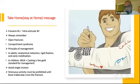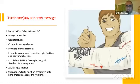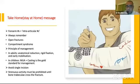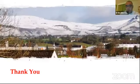Take-home messages: Forearm fractures are intra-articular fractures. Always remember open fractures and compartment syndrome. The principle of management in adults is anatomic reduction, rigid fixation, and early mobilization. In children, the gold standard is closed reduction and casting. Avoid a single incision when fixing both bones. Strenuous activity must be prohibited until bone trabeculae cross the fracture.